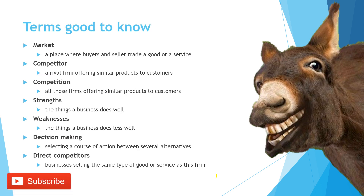We have listed about 15 good terms to know for your business studies exam. Market: a place where buyers and sellers trade a good or service. Competitors: a firm offering similar products to customers. Competition: all those firms offering similar products to customers. Strength: the things a business does well. Weakness: the things a business does less well.